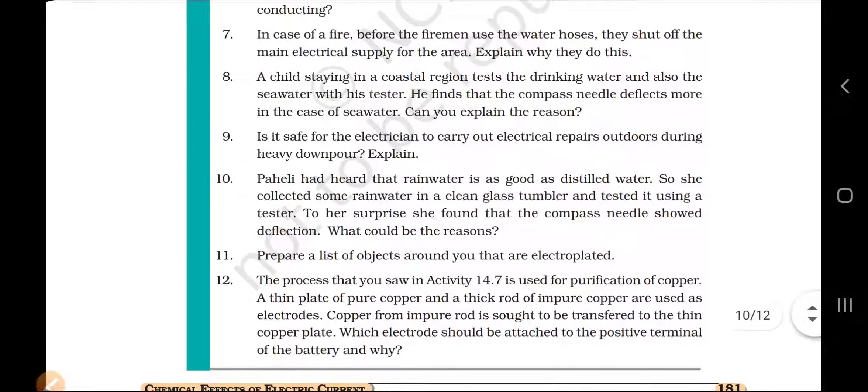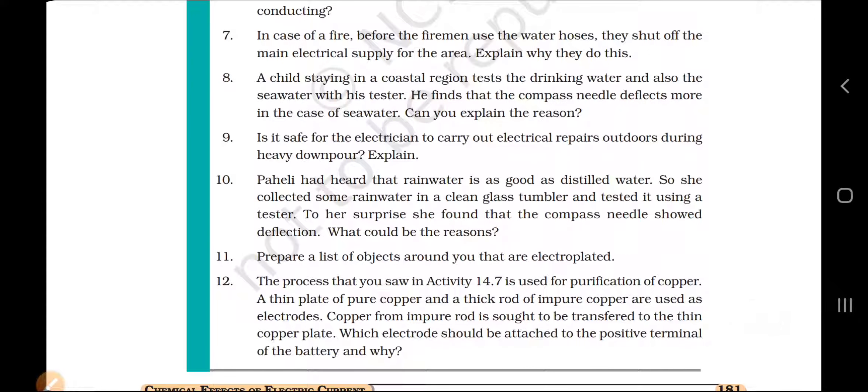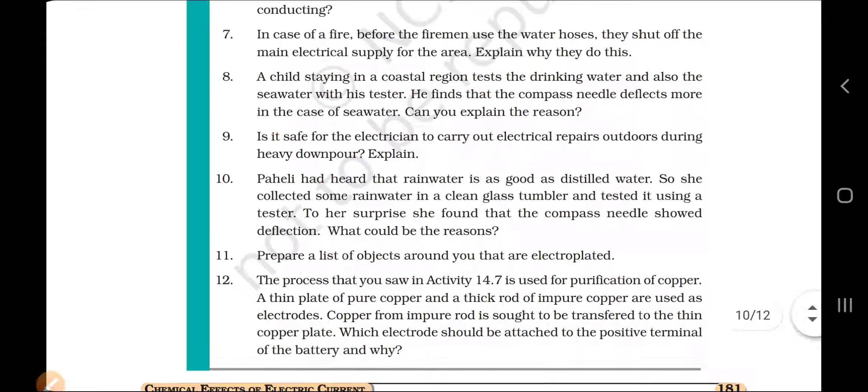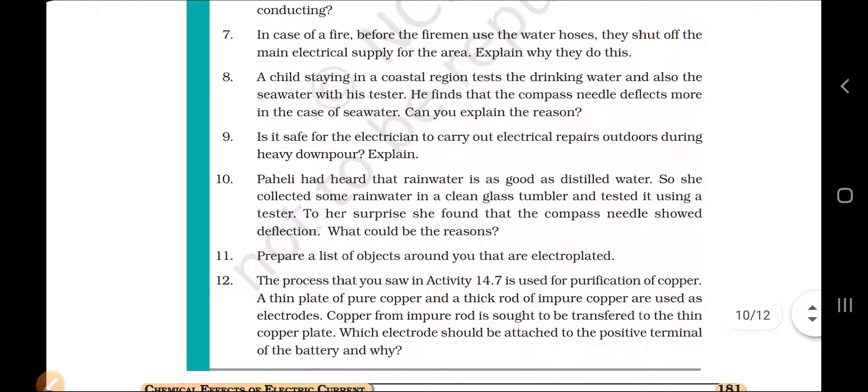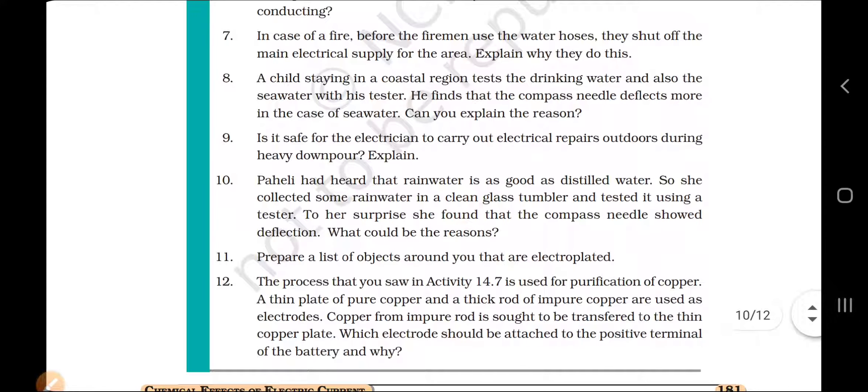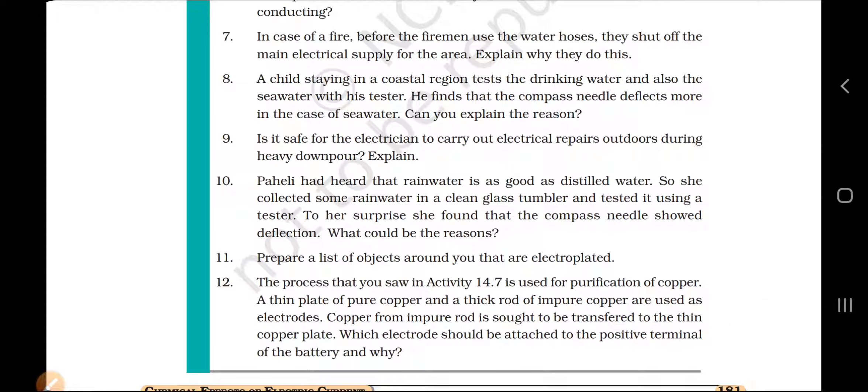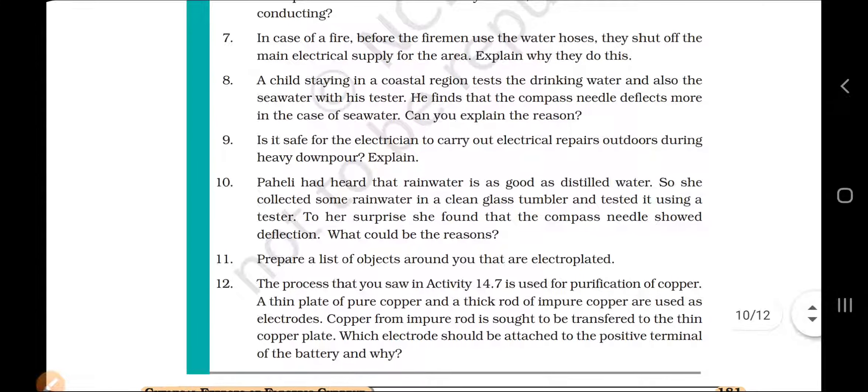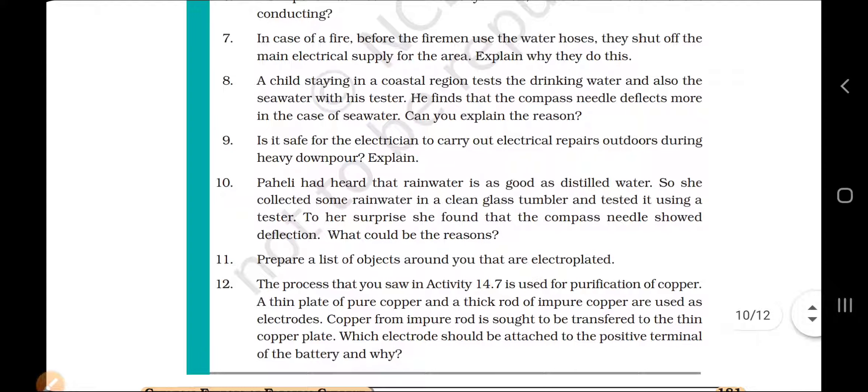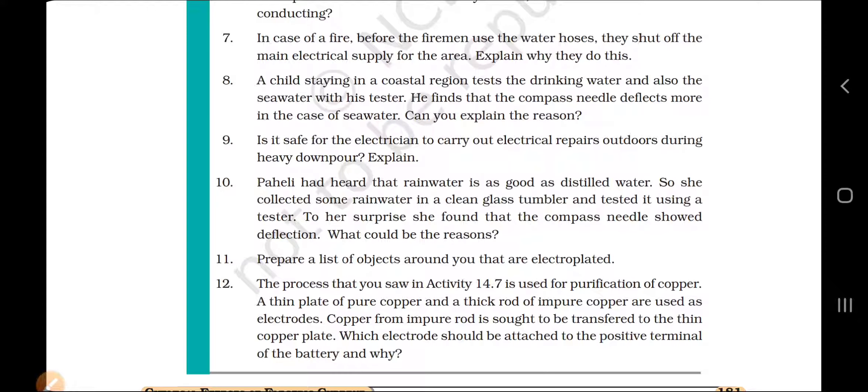Question 9. Is it safe for the electrician to carry out electrical repairs outdoor during heavy downpour? No. An electrician should not be carrying out electrical repairs while it is raining outside. Why? Because rainwater is a good conductor of electricity and it might cause electrocution of the electrician. This also I have explained in my previous video.